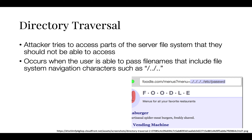Then, we have directory traversal attacks. This is when the attacker tries to access parts of files of the server's file system that they should not be able to access. This occurs when the user is able to pass file names that include file system navigation characters, as you can see here. With this attack, it may be possible to access arbitrary files and directories stored on file systems. All the attacker needs is a web browser and some knowledge on where to blindly find any default files and directories in the system. A solution to protecting against this attack is to sanitize the input.